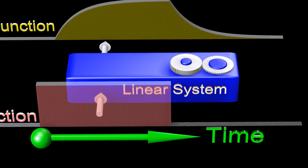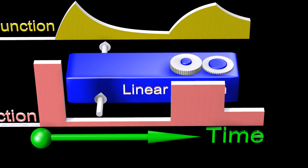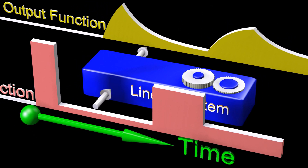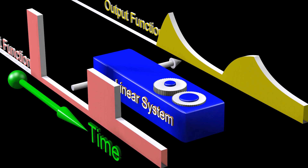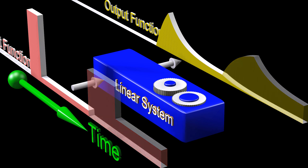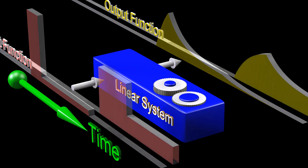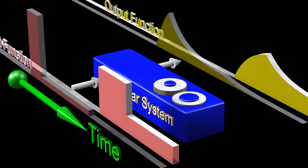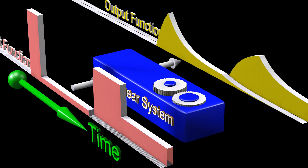The input function can be any size and any shape. The fact that the system is linear means that if we think of the input as the sum of two different input functions, then the output will be the sum of the two associated output functions.